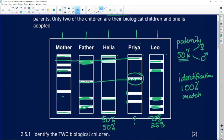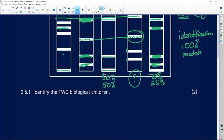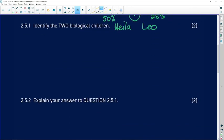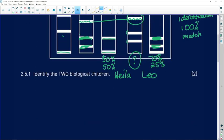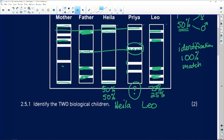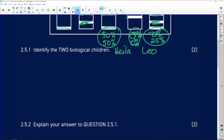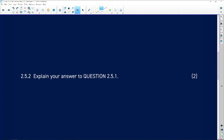So from our discovery of matching, we see that Priya doesn't match the two parents. So we would identify the two biological children as being Hela and Leo. Explain your answer. We've already worked it out. We've talked about percentage matches, and this of course is a zero percent match, and that explains why we are confident in saying that Priya is adopted.